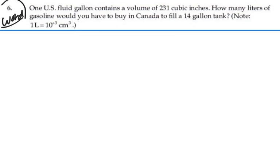All right, let's find out how many liters there are in a gallon first. So if we have one gallon, we're told that that is equal to 231 cubic inches. We can convert and say that there is 2.54 centimeters per inch.